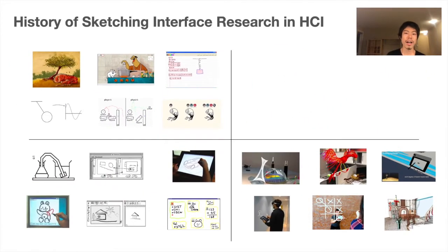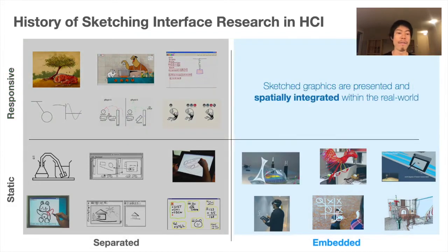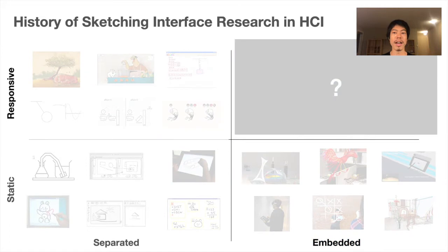If we categorize the existing work, we can see a history along two dimensions: one is static or responsive, where sketched elements change and animate; another is separated or embedded, where sketched elements are spatially integrated within the real world. However, not much work has investigated the intersection of embedded and responsive sketching interfaces that leverage both dynamic sketching and AR or mixed reality.